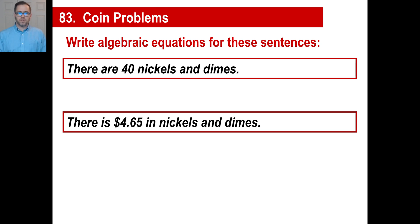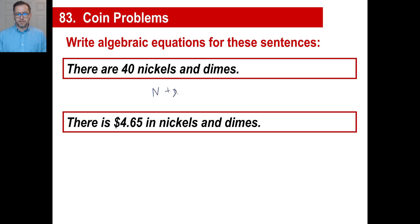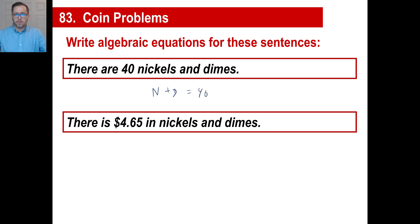Let's do another set. There are 40 nickels and dimes — how would you write that as an equation? You could go N plus D equals 40. We don't know how many of each; we just know there's a big pile of them.